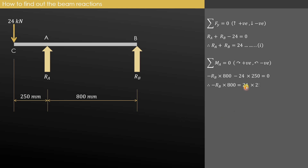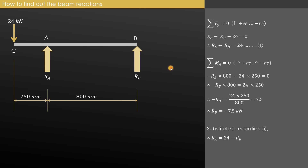Transferring the negative term 24 into 250 to the other side, it becomes positive. So Rb equals 24 into 250 divided by 800, which gives 7.5. With the negative sign transferred, Rb equals minus 7.5 kN. The negative sign indicates the assumed direction of Rb is wrong — it should act downward. Substituting into equation 1, Ra equals 24 minus (minus 7.5), giving Ra equals 31.5 kN.